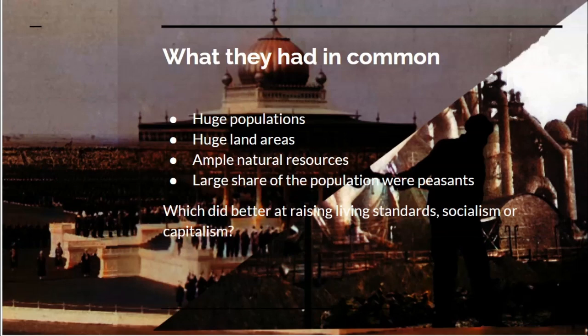So, what did the USSR — which had recently taken over the Russian Empire, with the Bolsheviks having recently established communist government in the territory of the old Russian Empire — have in common with the British Empire, which had been its main rival in imperialist days? They both had huge populations, huge land areas, and ample natural resources. And in both cases, a large share of the population were peasants. The majority of the British Empire population were peasants, and the majority of the Soviet population, continued from the Russian Empire, were also peasants. So, which did a better job of raising living standards — the socialist planned economy or capitalism?